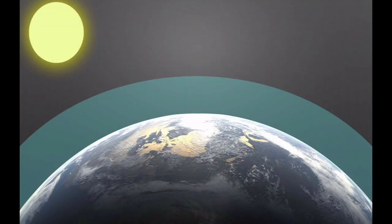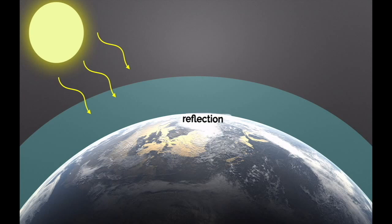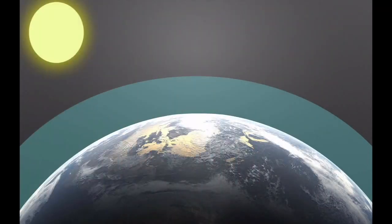Another thing that can happen to insolation that reaches the Earth's surface is reflection. There are some surfaces on Earth, like clouds, which are very close to the ground, or even ice and water, where very little absorption takes place. And instead, the light energy, the insolation, just bounces back into space. So that's something that can happen to that 60% or some of the 60% that reaches Earth's surface.